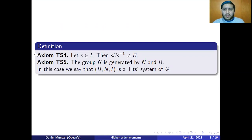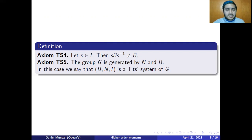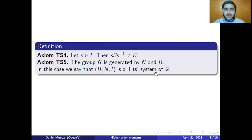Then I have two extra axioms. Axiom TS4 says that if I take an element S in the set of generators I, then SBS inverse is different from B. And finally, axiom TS5 says that the group G is generated by N and B. In this case, I'm going to say that B and I is a Tits system of G.